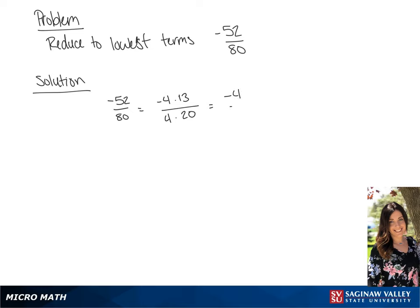We'll rewrite this further as negative 4 over 4 times 13 over 20. Since we know negative 4 over 4 is equal to negative 1, we get the final answer of negative 13 over 20.